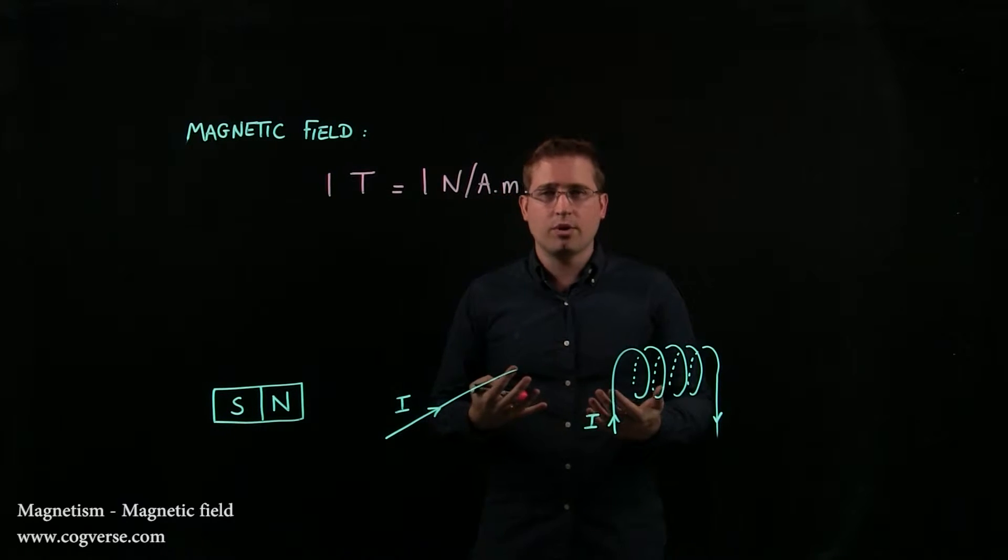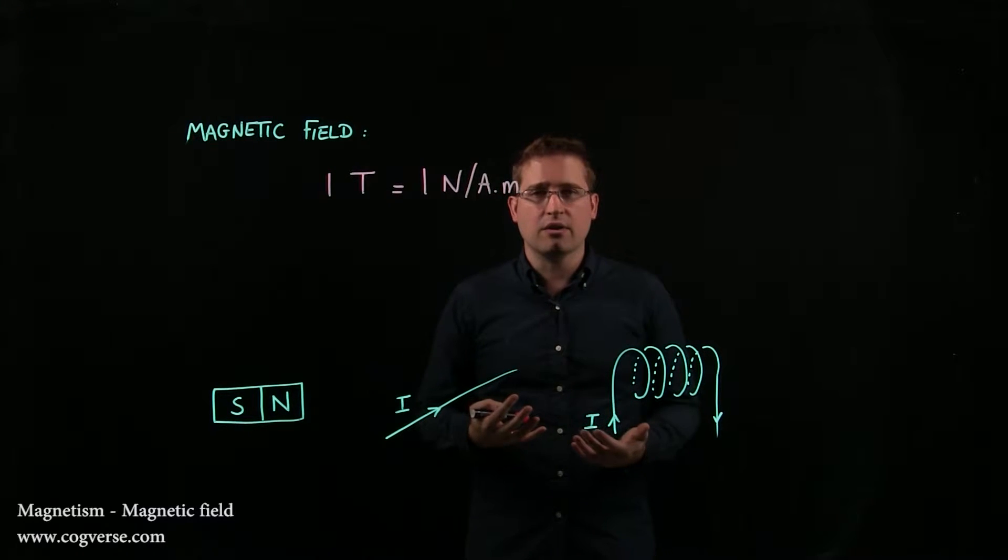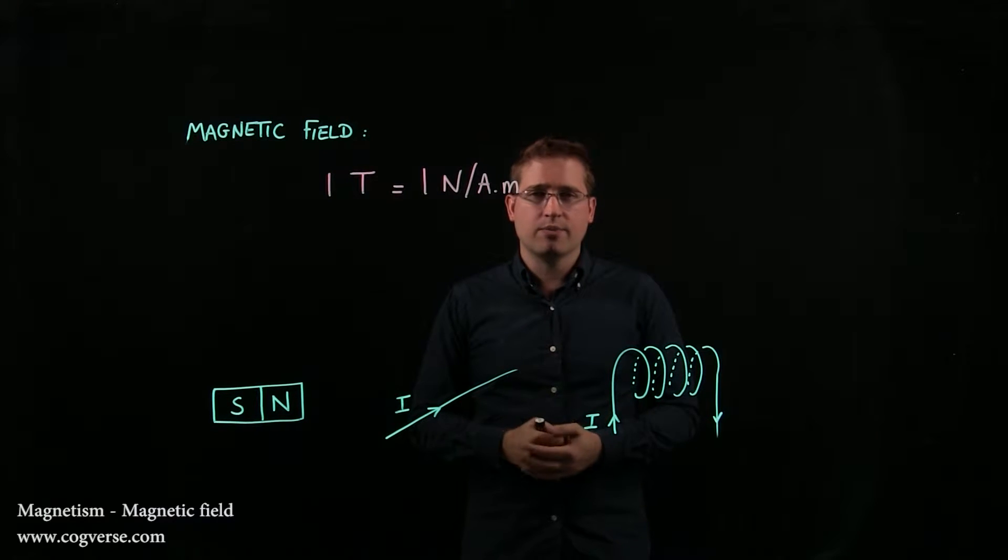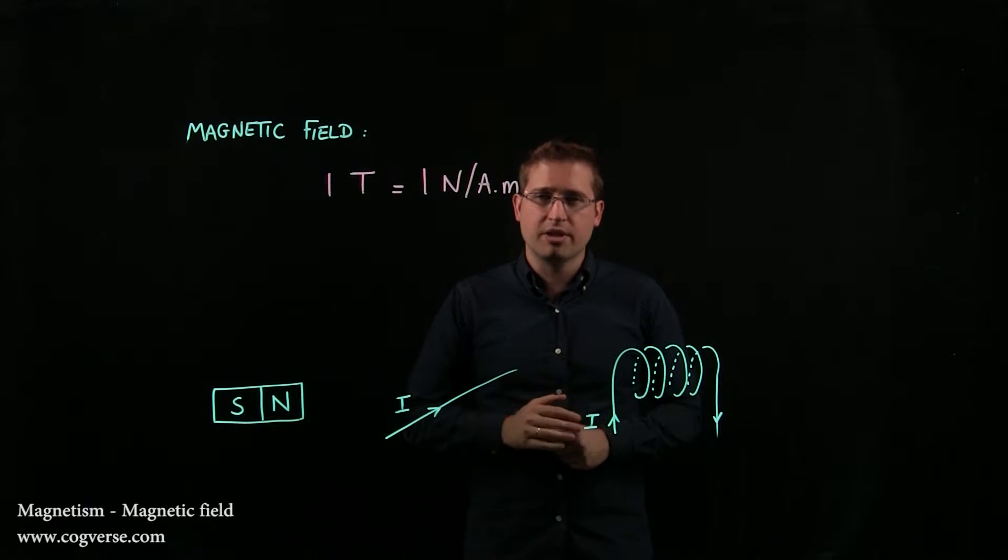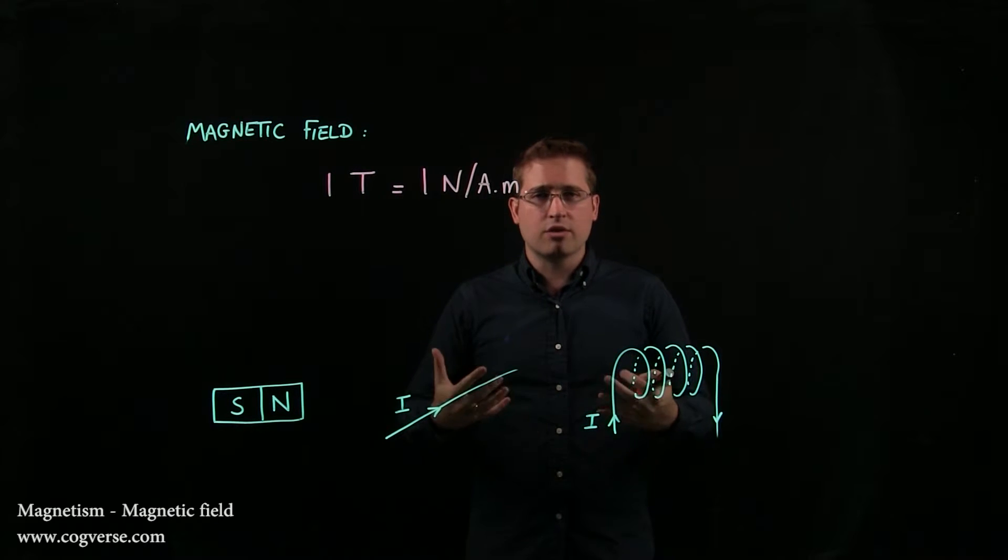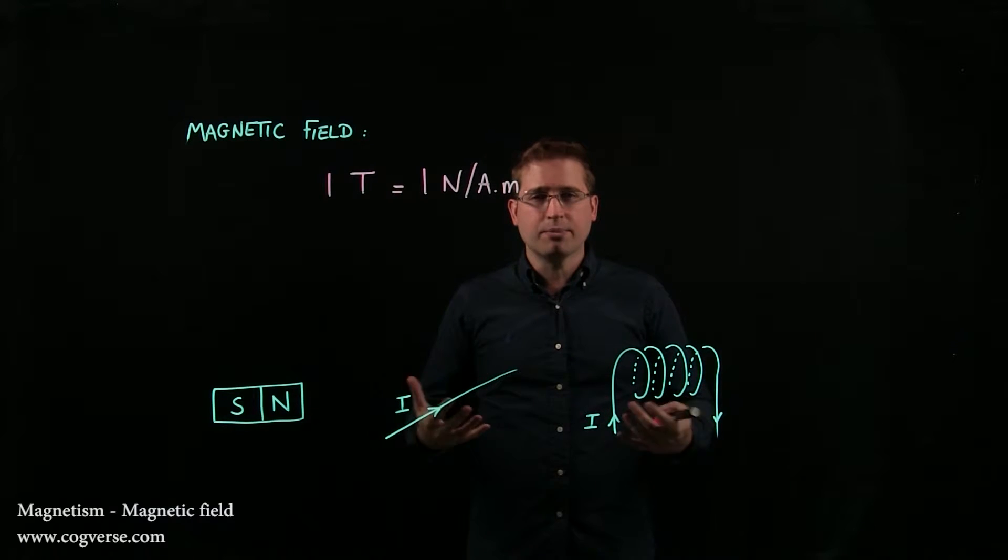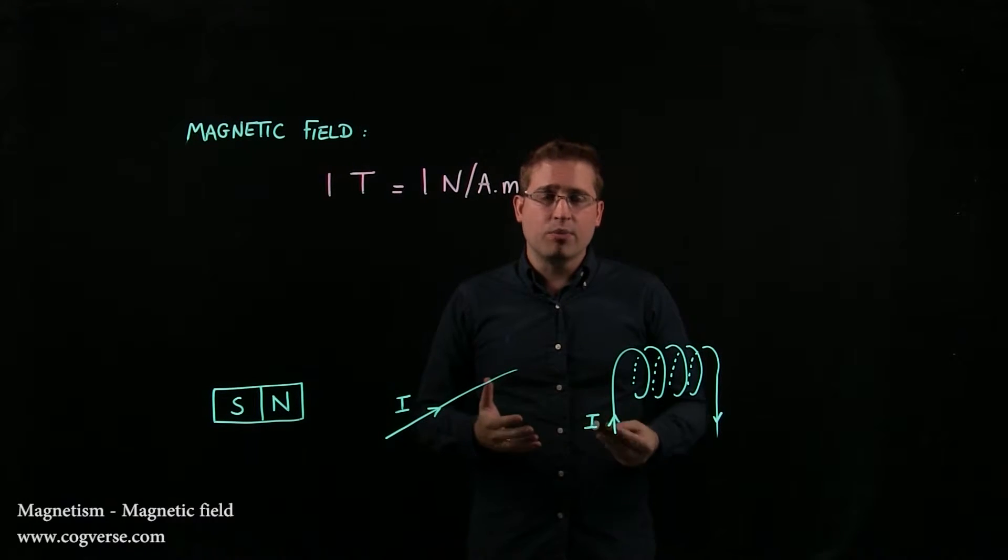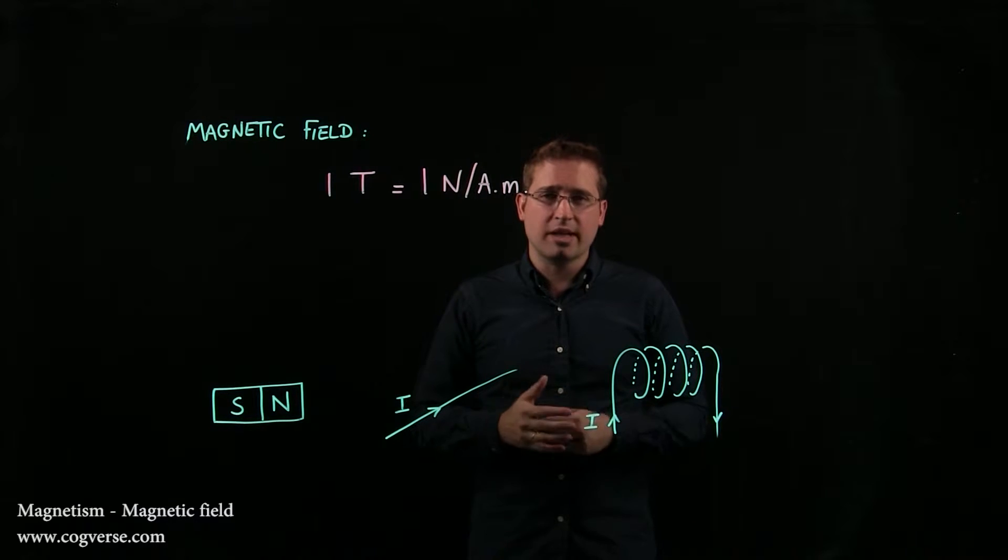For a given region with a magnetic field, we usually draw magnetic field lines. It's kind of like electric field lines, although they're a bit different. They represent or map the magnetic field that exists in a region. At any point, they are tangent to the magnetic field.